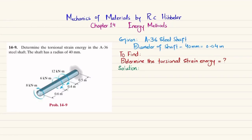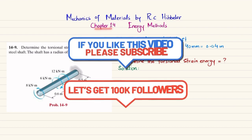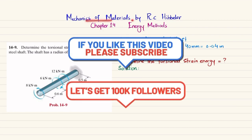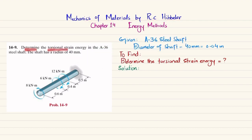Welcome back. Problem 14-9. This problem is taken from chapter number 14, Energy Methods, from the book Mechanics of Materials by R.C. Hibbeler. The statement is to determine the torsional strain energy in an A36 steel shaft.